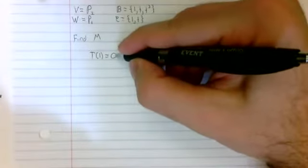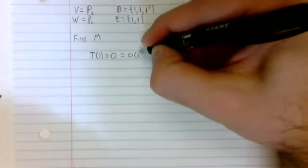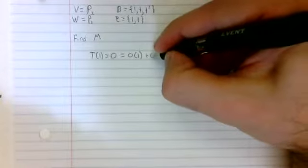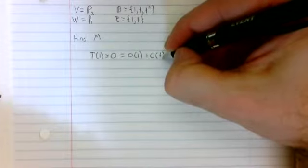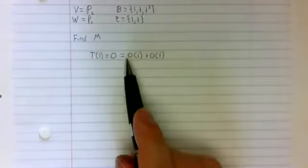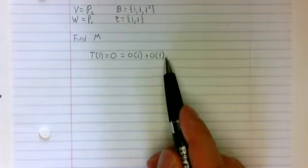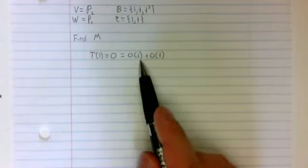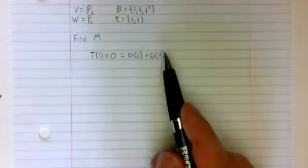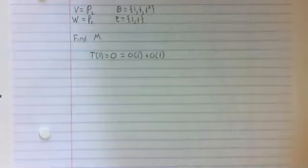The difference is going to be that we're going to express our answers in terms of the second basis. So rather than 0 times 1 plus 0 times t plus 0 times t squared, we're only going to get to these terms here. t squared is not in the basis c.